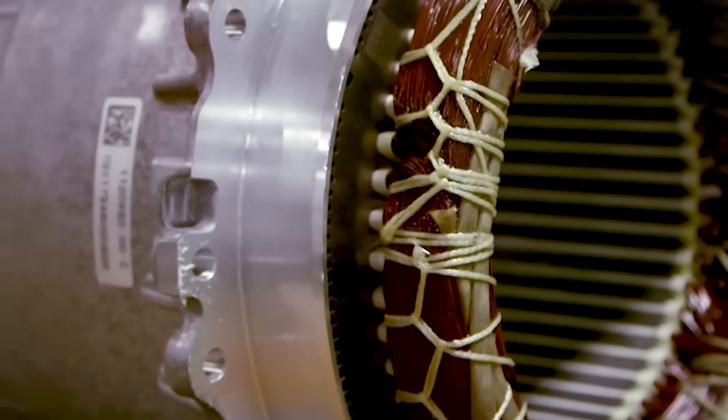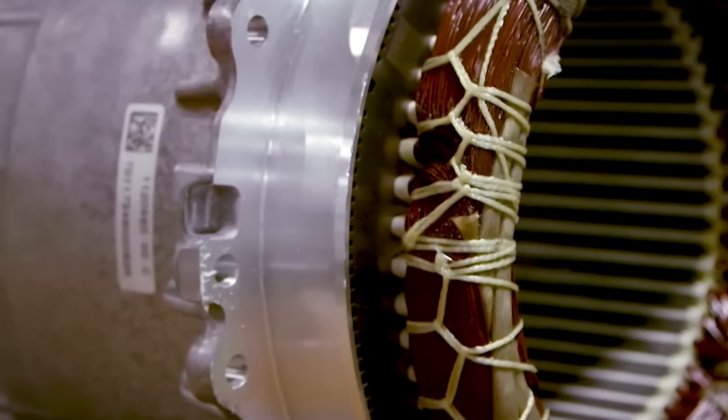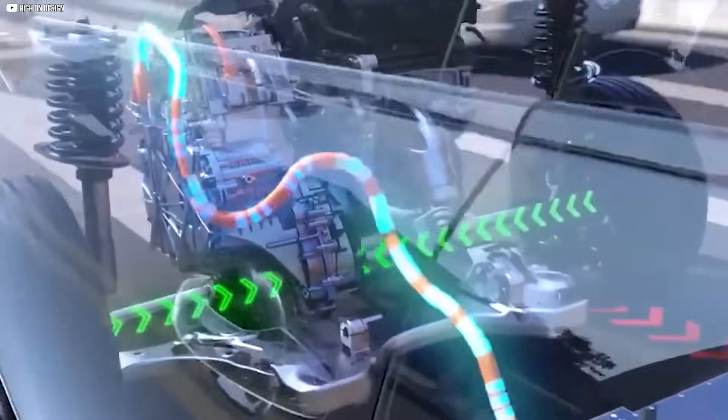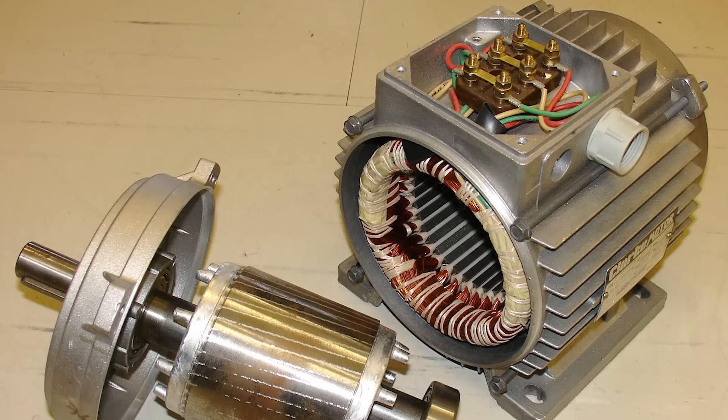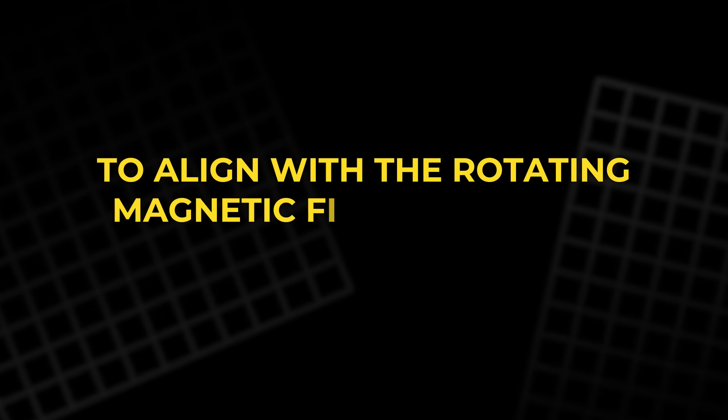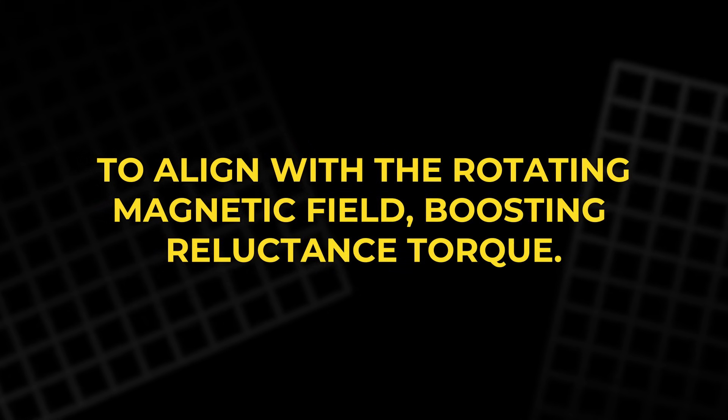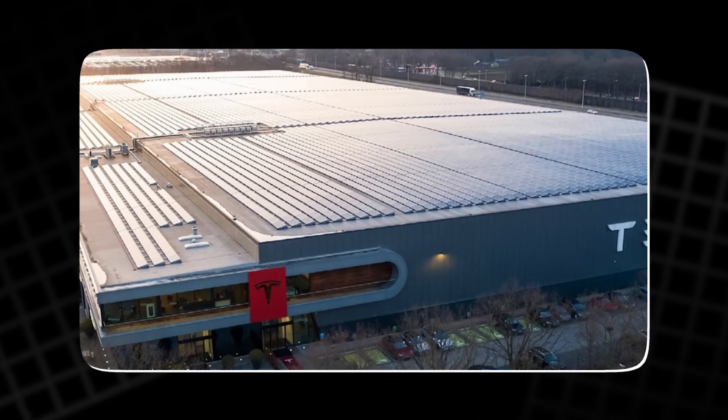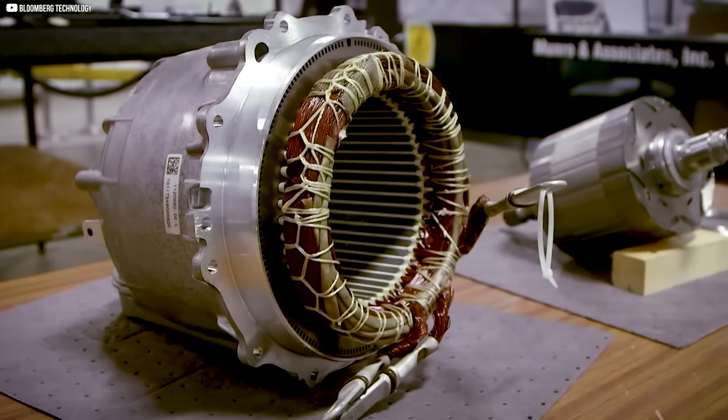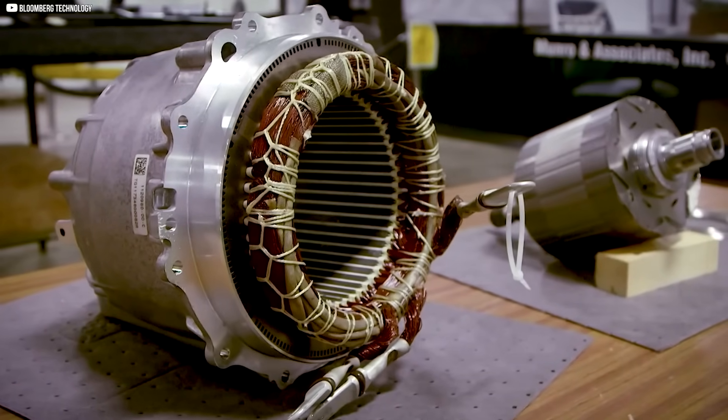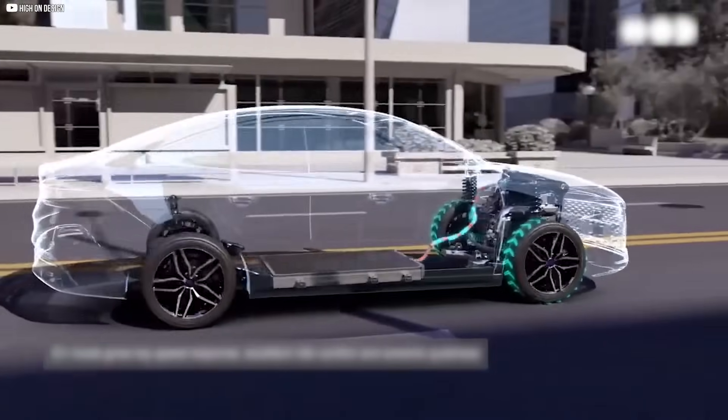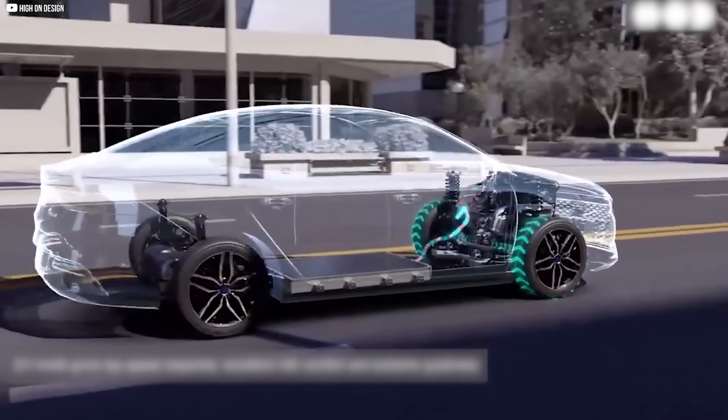First, the internal placement of the magnets helped reduce back EMF. The further the magnets were from the stator windings, the less influence they had on unwanted voltage buildup at high speeds. Second, the unique slot geometry amplified the rotor's natural tendency to align with the rotating magnetic field, boosting reluctance torque. Tesla didn't stop there. They went further and segmented each magnet into smaller pieces inside the rotor. This might seem like a minor detail, but it played a big role in controlling heat. Smaller segments meant lower eddy current losses, keeping the magnets cooler during operation and preventing demagnetization.